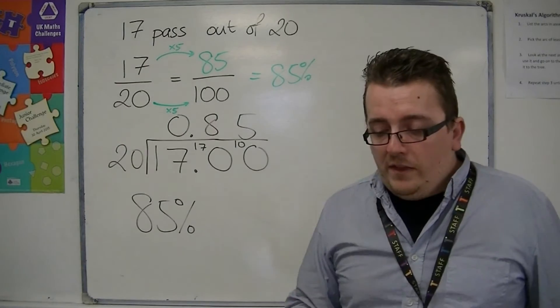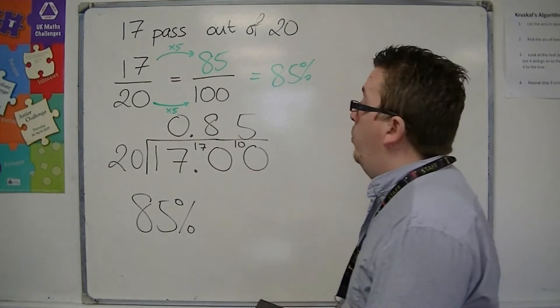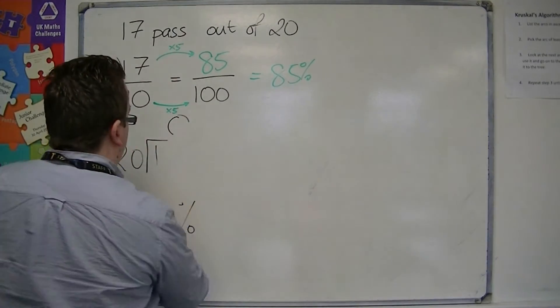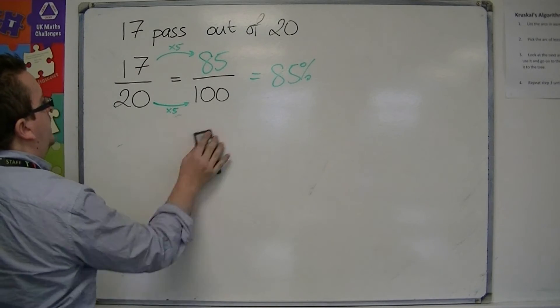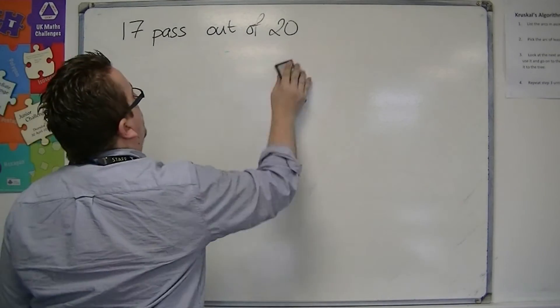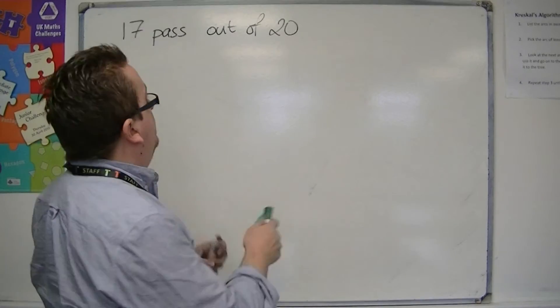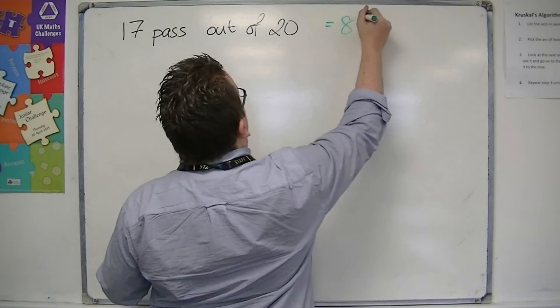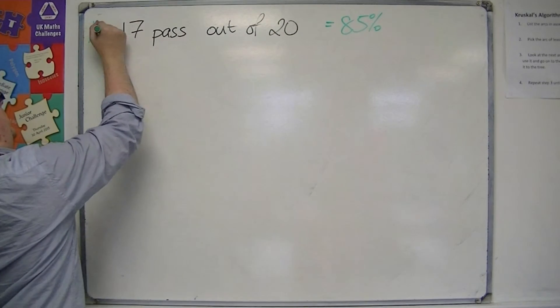Now let's say that that is class A. So 17 out of 20 passed and we worked out that that was 85%. This is class A.